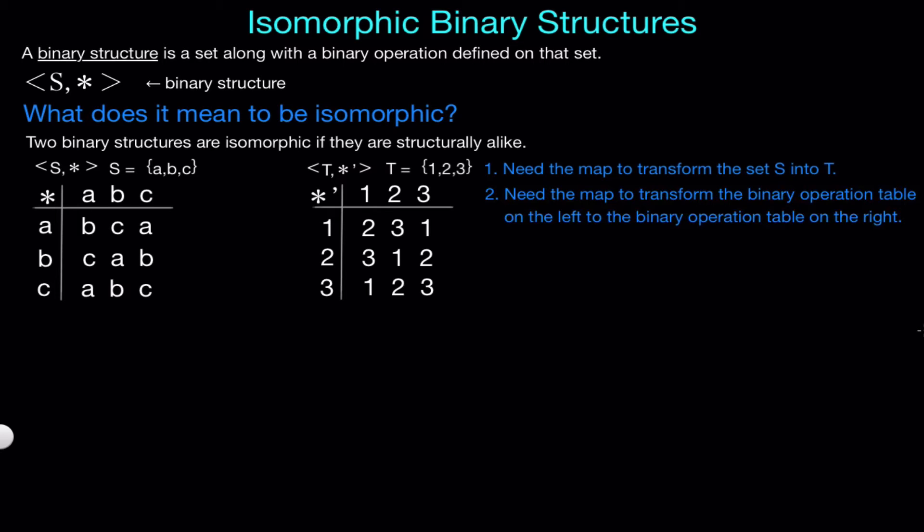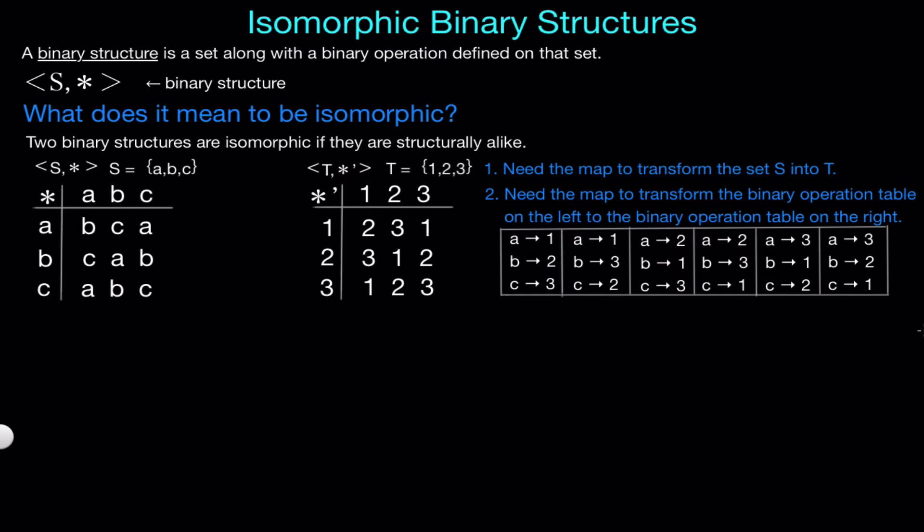Looking at the first condition, we need a map that changes every element in S to exactly one element in T. There are six maps that do this, which are listed here in this table. Now we have to check to see if any one of these six maps also satisfies condition 2. If you go through each map, you will see that the only one that satisfies condition 2 is the first one, which sends A to 1, B to 2, and C to 3. Now, if we replace every A, B, and C in the left table with 1, 2, and 3 respectively, and change the binary operation symbol star to star prime, we will end up with the exact table we have here on the right.